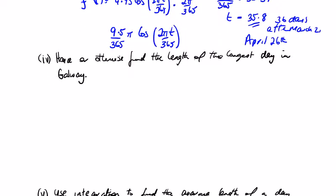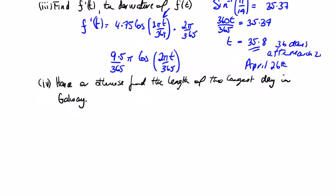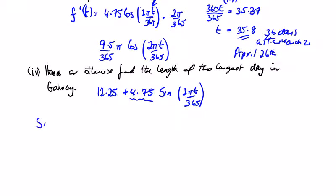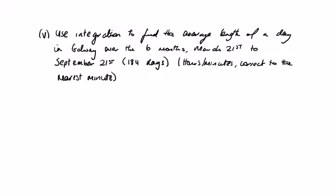Hence or otherwise, find the length of the longest day. Looking at our function: 12.25 + 4.75 × sin(something). To get the maximum, we need the sine to be at its maximum value of 1 (at 90°). So the longest day is simply 12.25 + 4.75 = 17 hours.